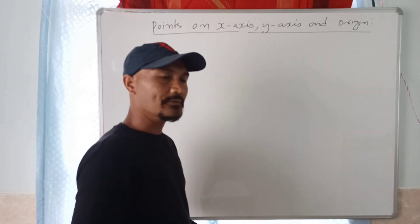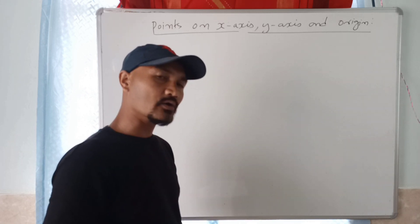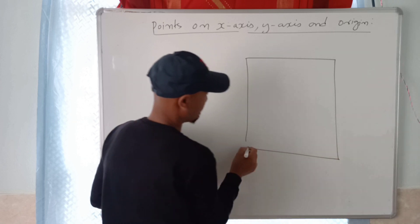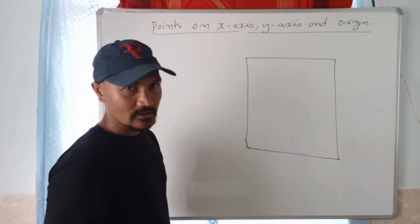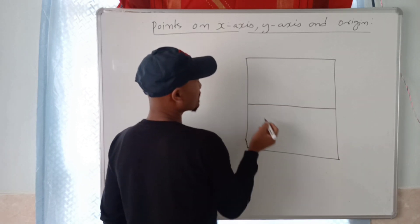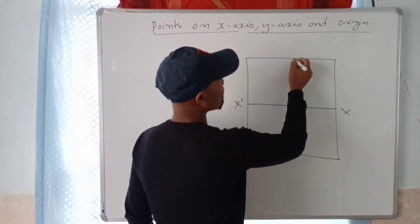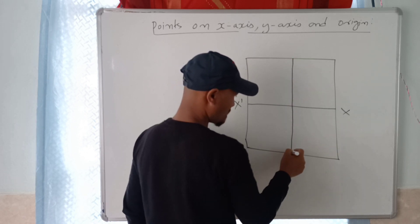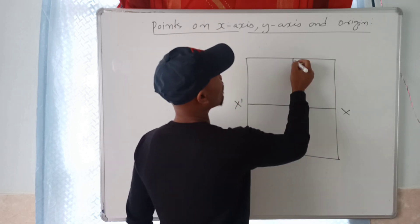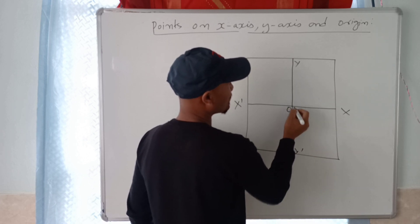We are going to talk about the right angular coordinates. We are going to talk about the right angular coordinates when we draw on graph paper. Now, we are going to talk about x-axis and the origin.